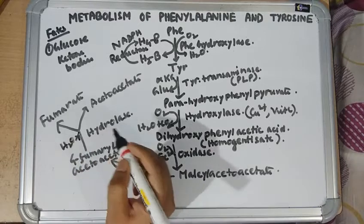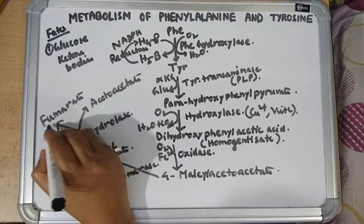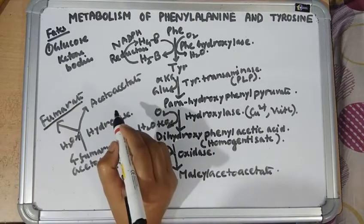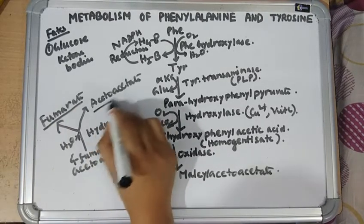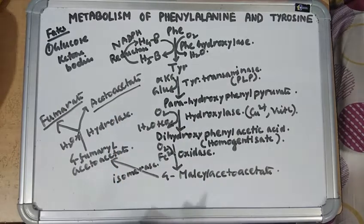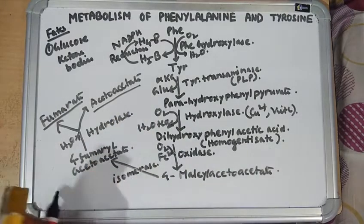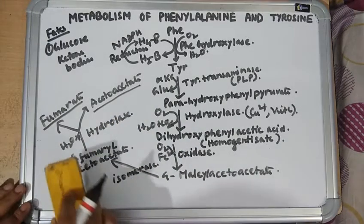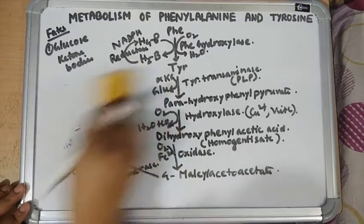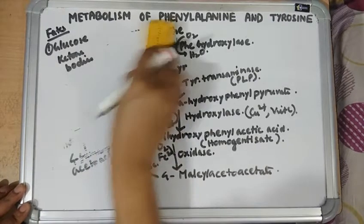Fumarate enters the TCA cycle and forms glucose, making phenylalanine and tyrosine glucogenic. Acetoacetate is a ketone body, so it can be converted into acetyl-CoA and used to form fatty acids, making them also ketogenic.